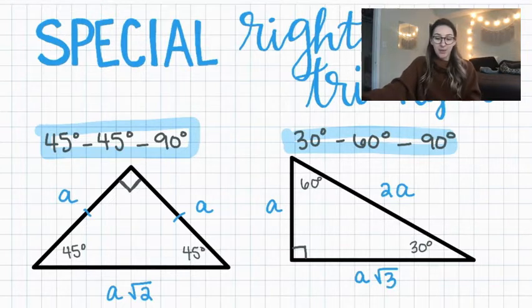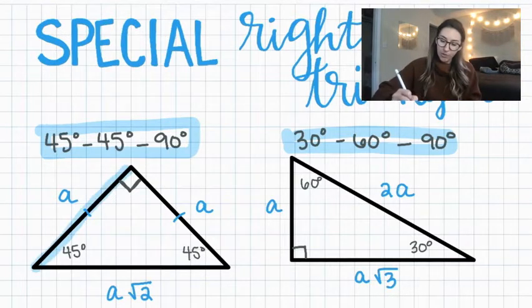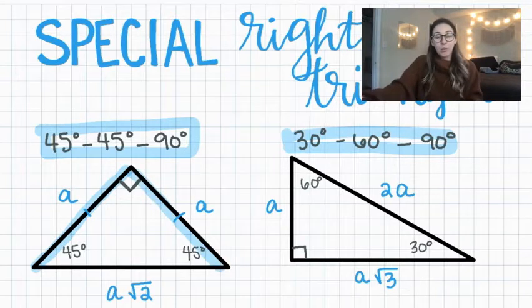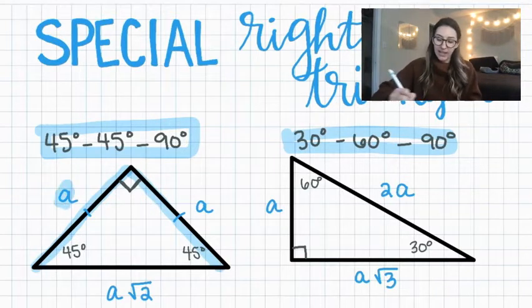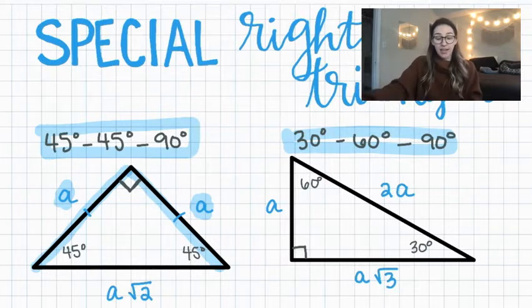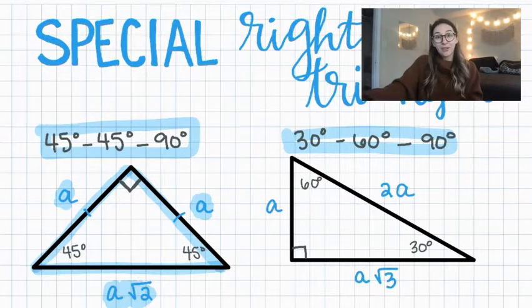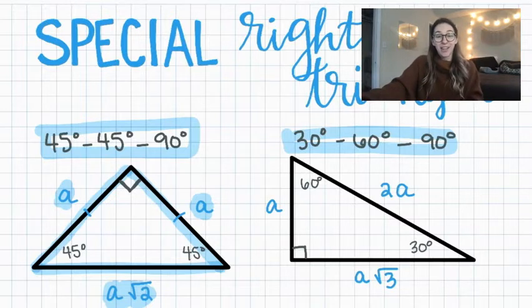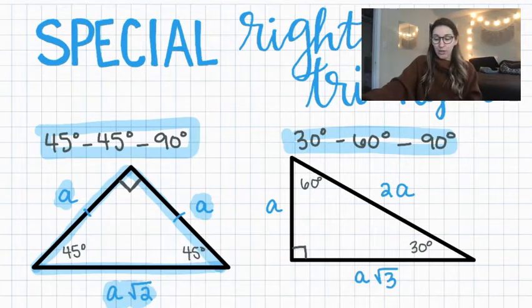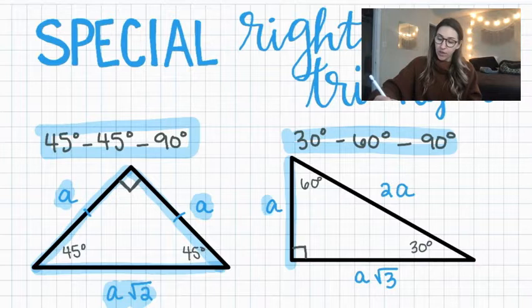Starting with the 45-45-90, we have two legs which are both the exact same, so we can call them both 'a.' The hypotenuse is equal to the leg 'a' times the square root of two. That is true every single time, and it's a shortcut we can use to solve for missing sides of this kind of right triangle.